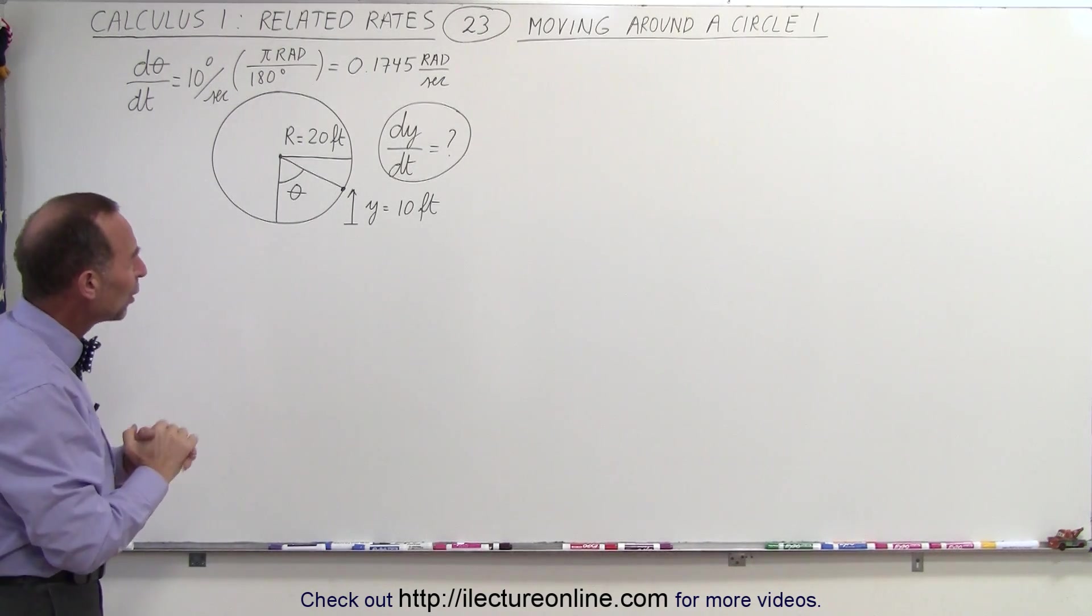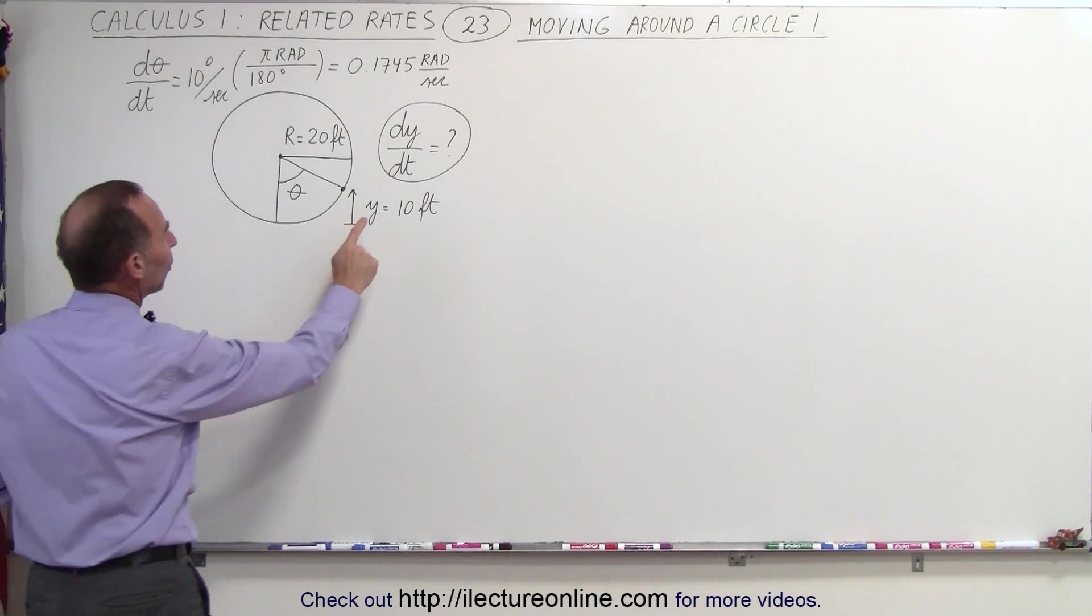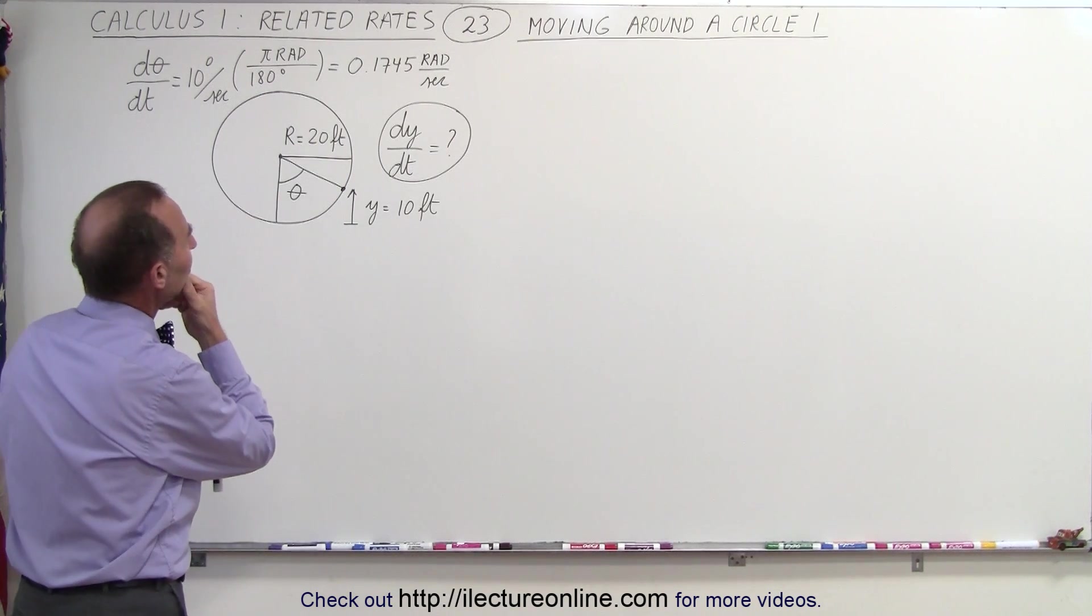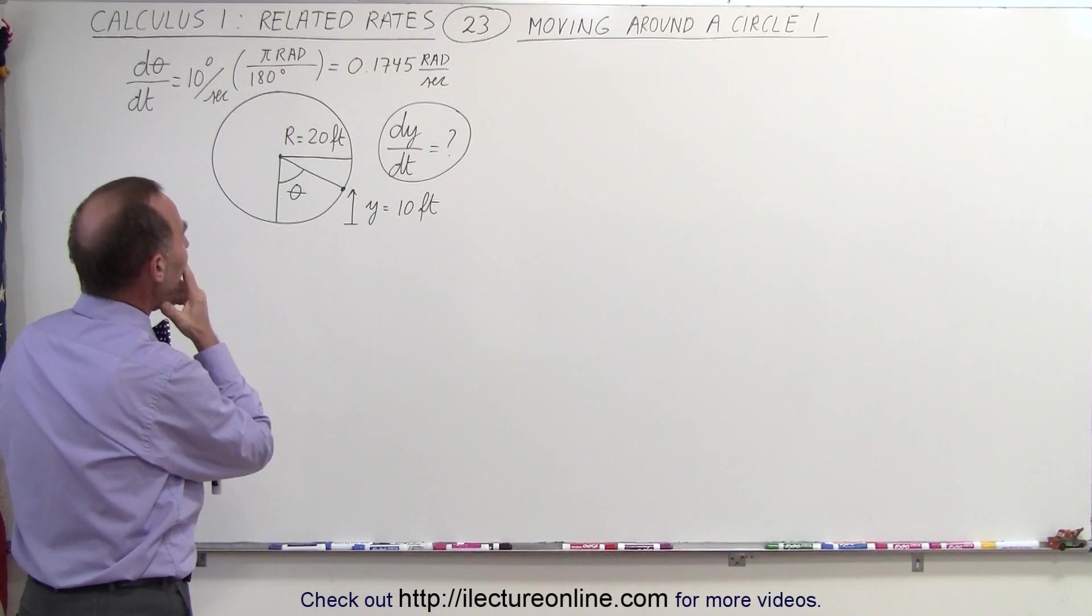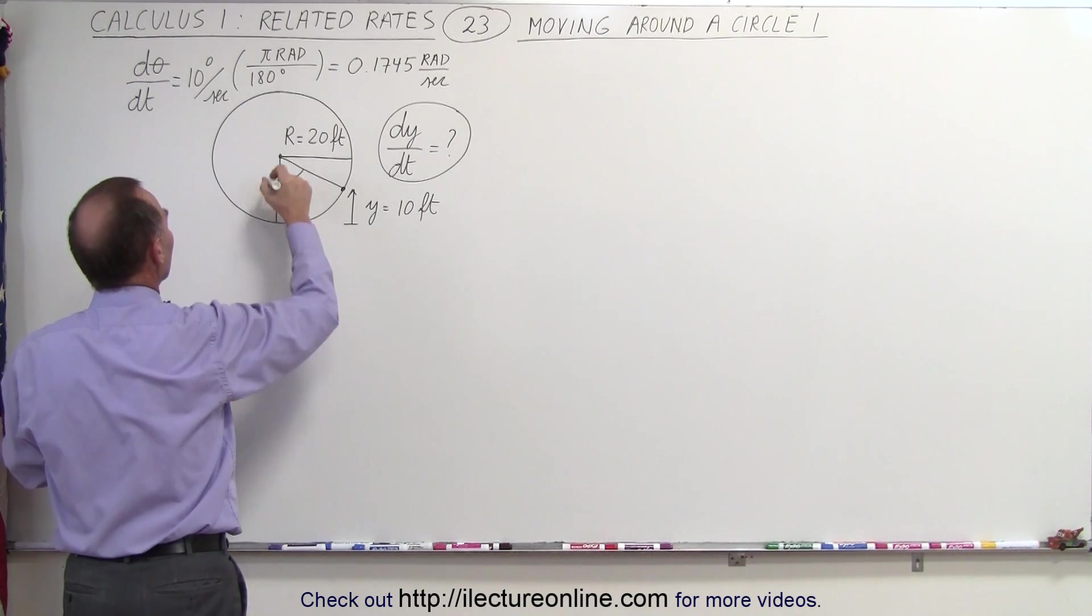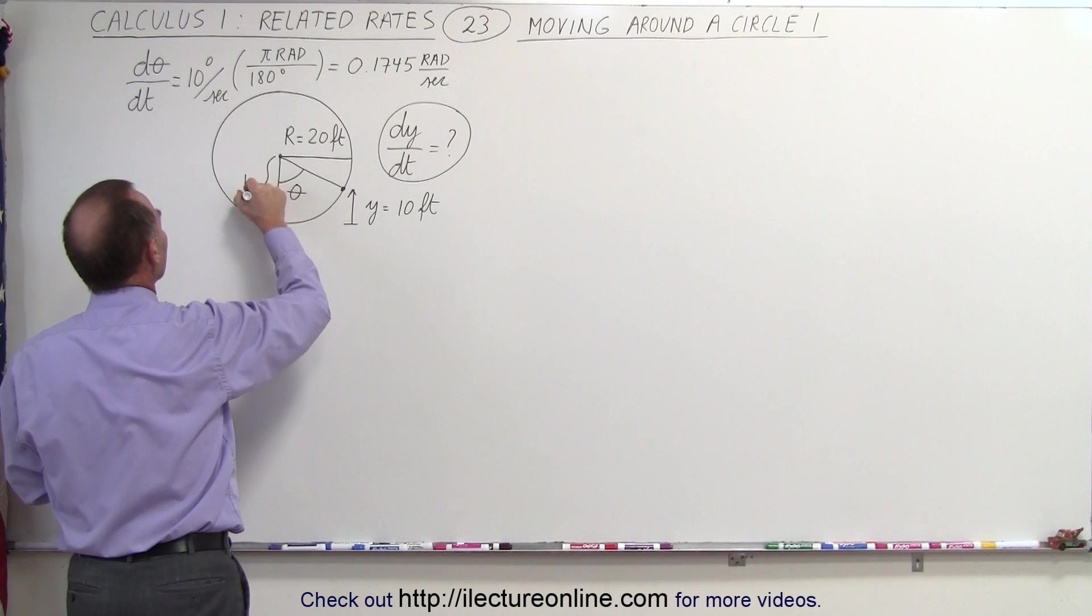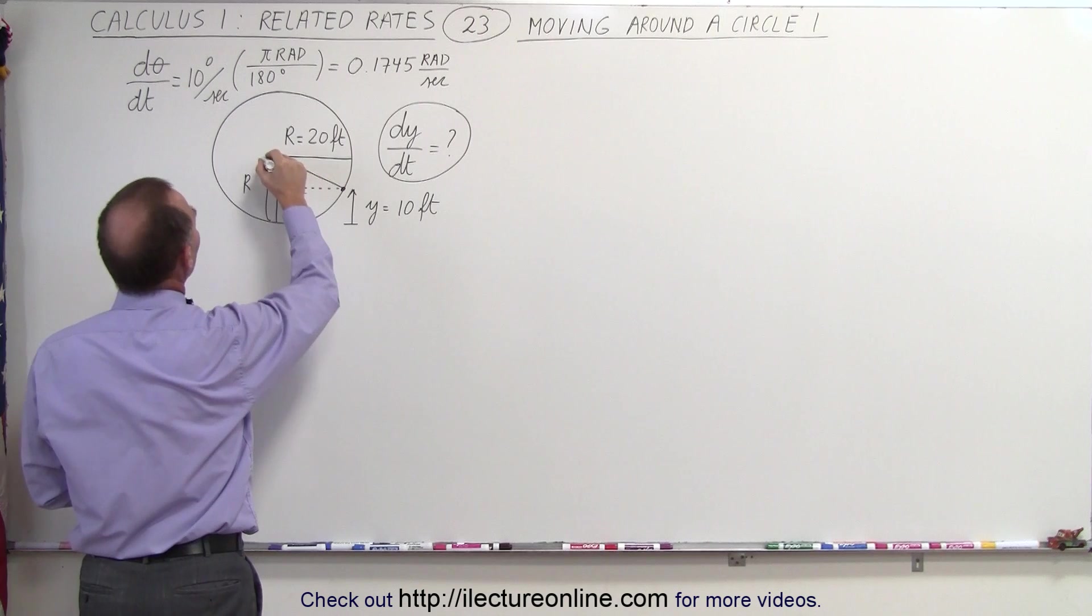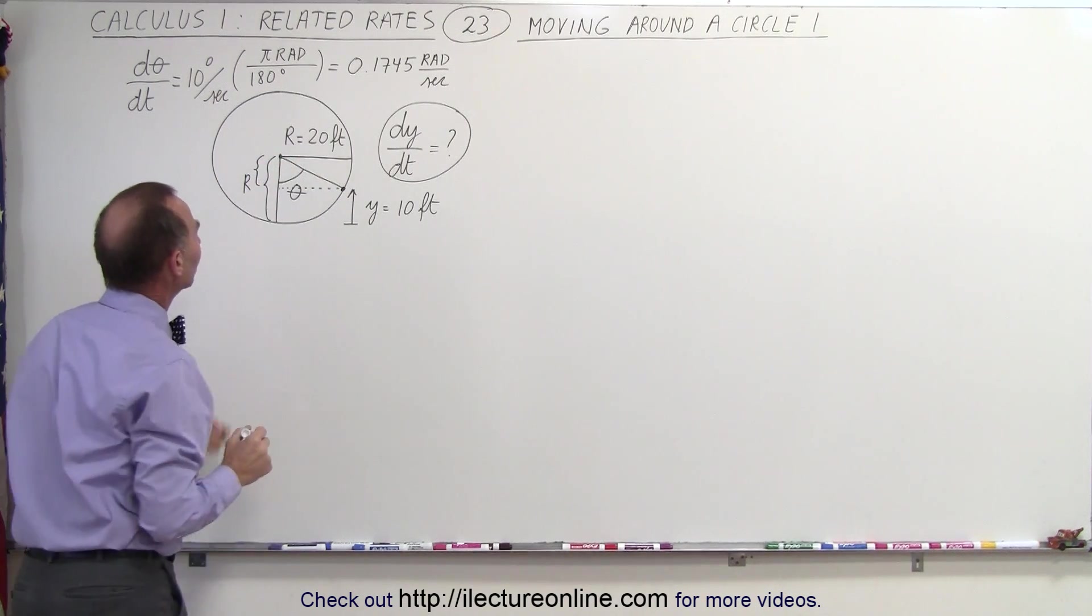How do we do that? Well, somehow we have to relate y to the angle and to the radius. So how can we do that? Well, first of all, let's see here. If this whole distance from there to there, if this is equal to r, then what we need to do is draw a line straight across this way and figure out what this distance is.